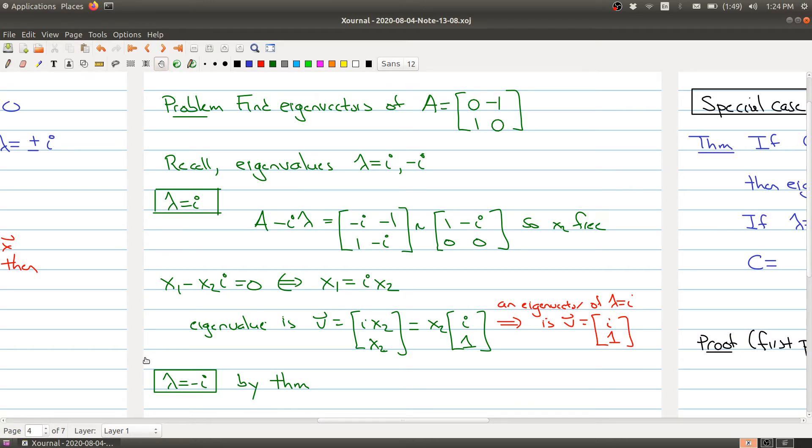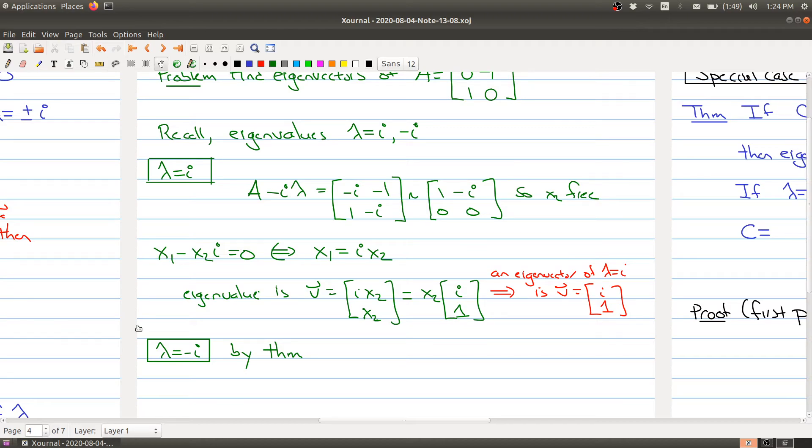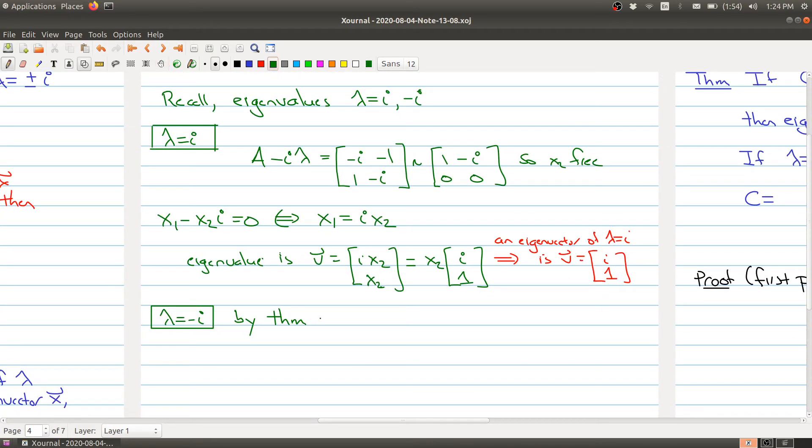Now let's say we wanted to find out the other eigenvector corresponding to lambda equals negative i. First, notice that the conjugate of i is negative i. So the theorem says, since we know an eigenvalue and its corresponding eigenvector, when we take the conjugate of the eigenvalue, we can figure out its eigenvector just by taking the conjugate of everything for the first vector.